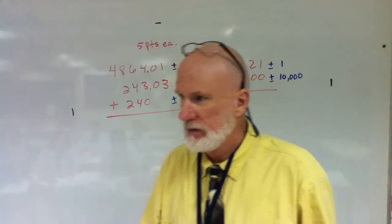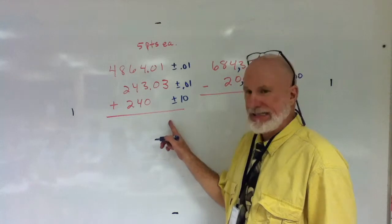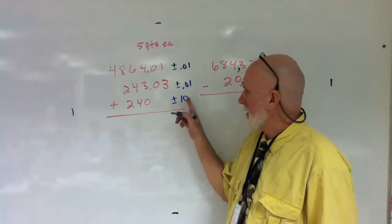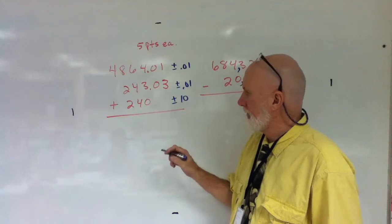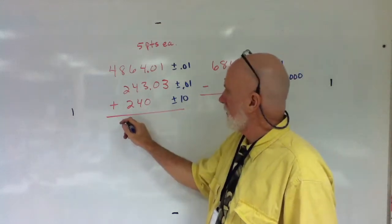Now remember, the greater the uncertainty, the lower the precision. The answer must have the exact same precision as the least precise.